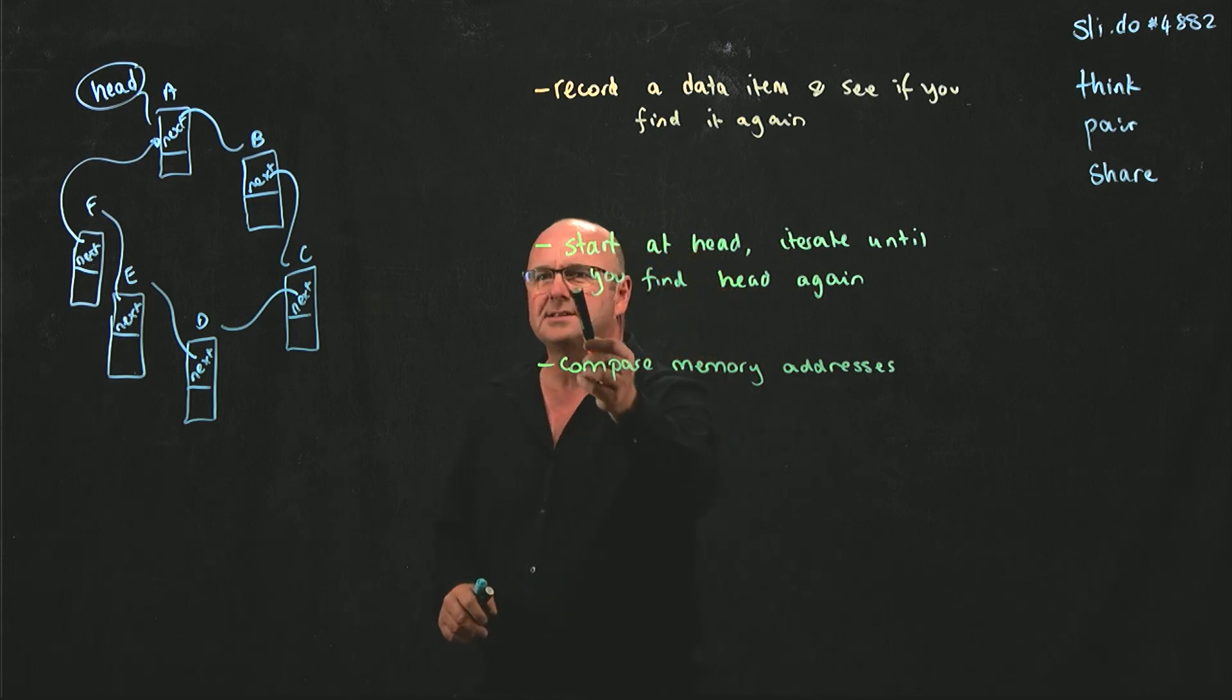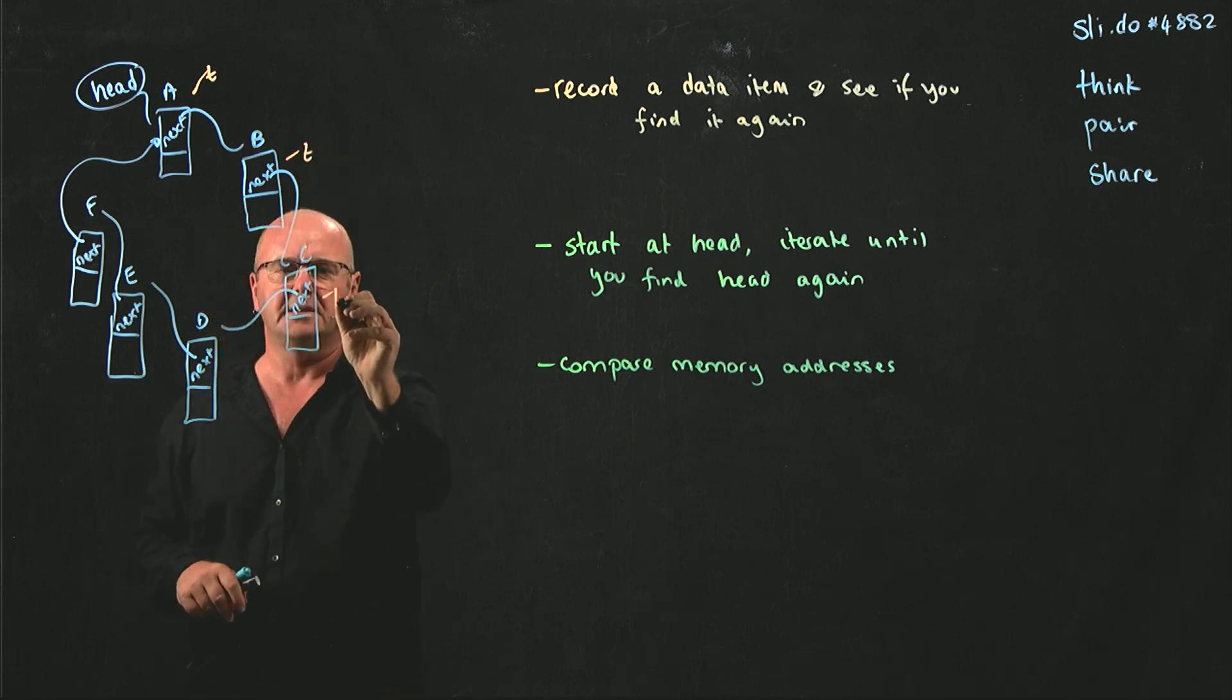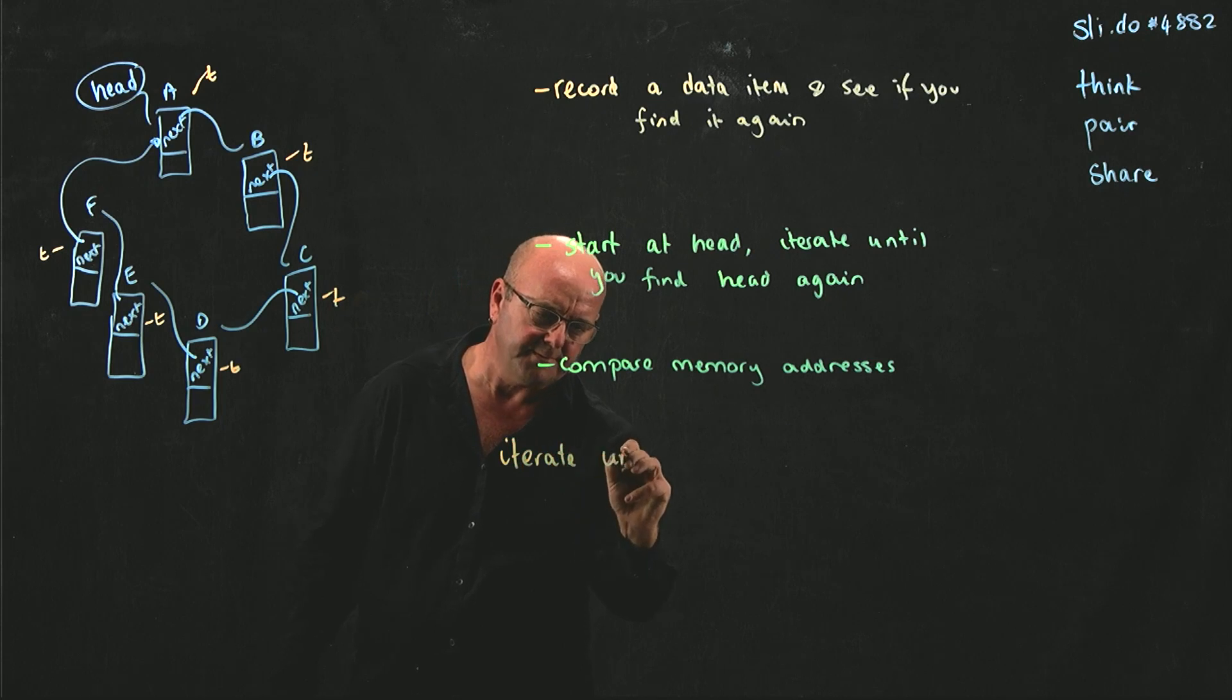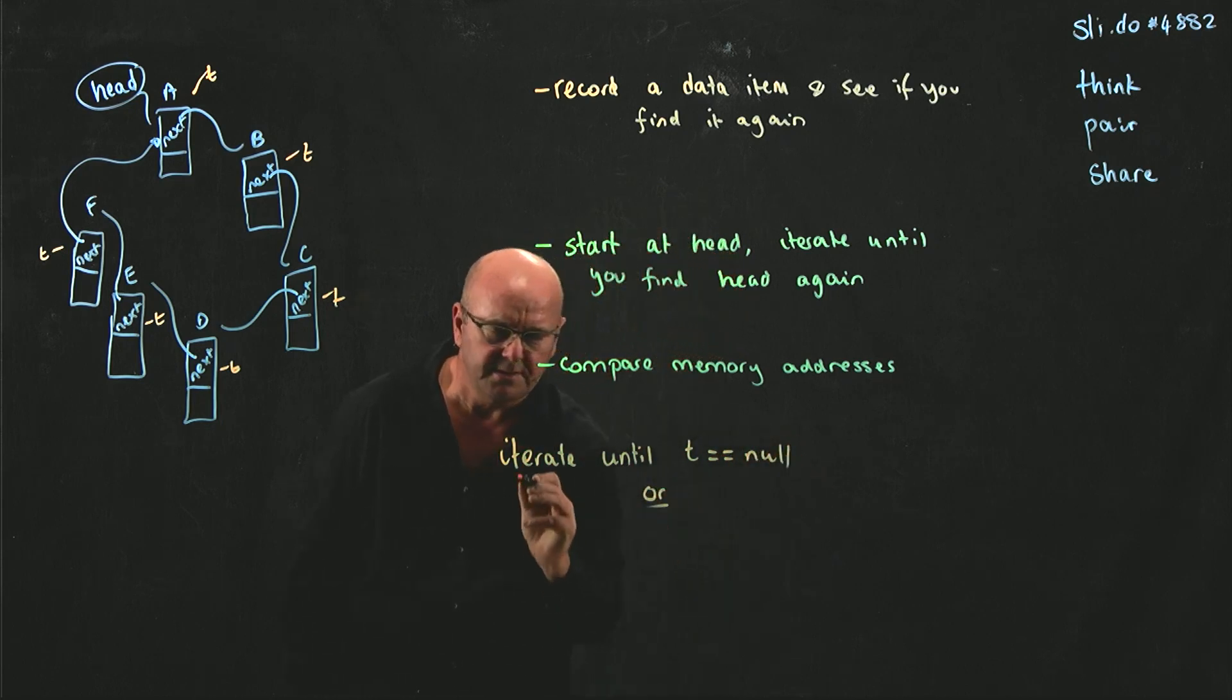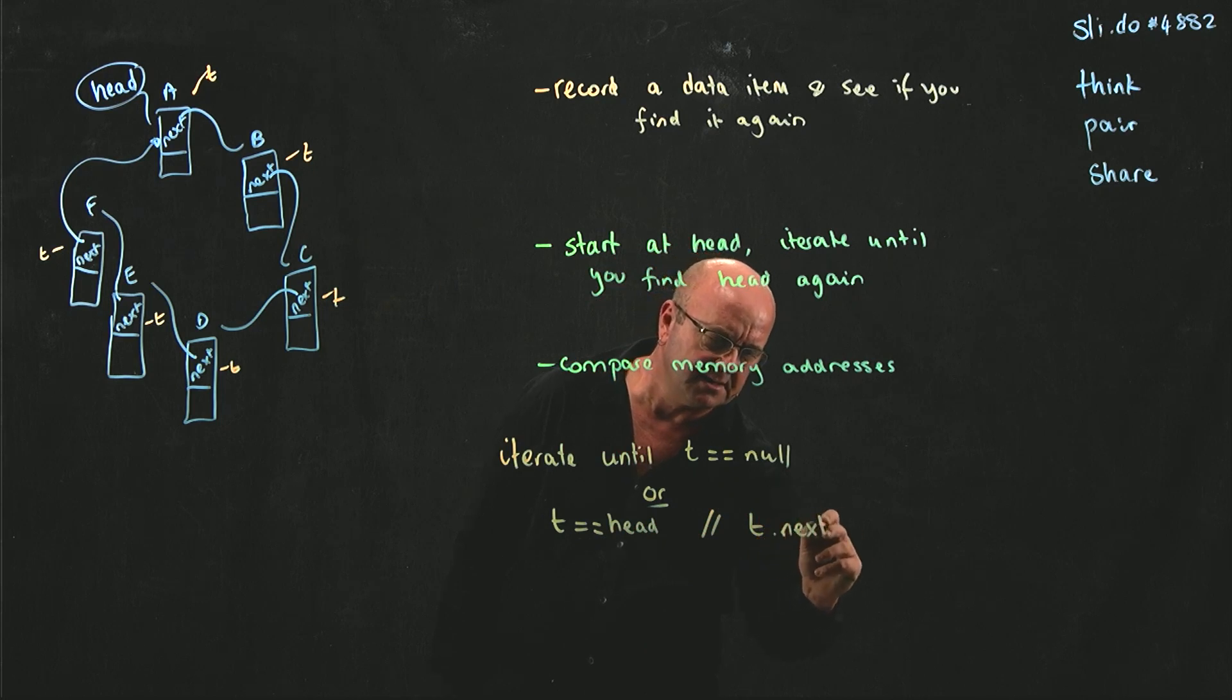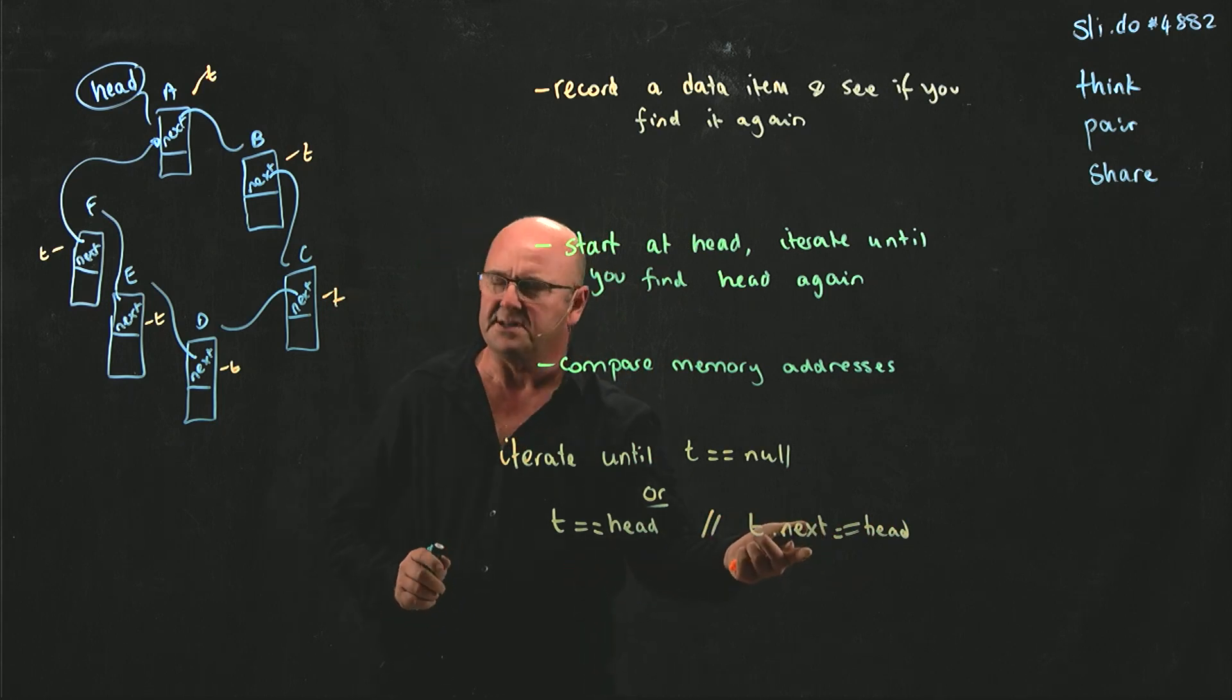All right, cool. So this is the way to do it. Start at the head, have a temporary pointer, let's just call it T, and you iterate through the list T, T, T, T, T. And there's two different ways you could stop. You could iterate until T, my temporary pointer, is equal to null, or the alternative is the temporary pointer is going to be the same as head, or my temporary pointer dot next is going to be the same as head. In fact, it doesn't matter in this case which two of those you stop at. This one saves you one step, but very marginal.